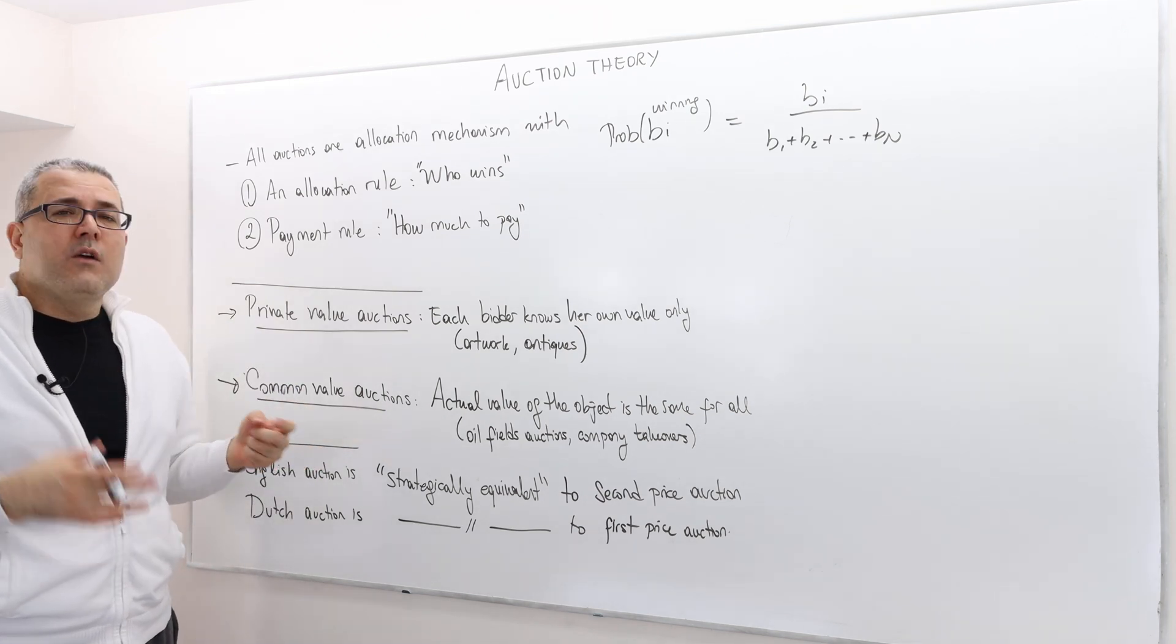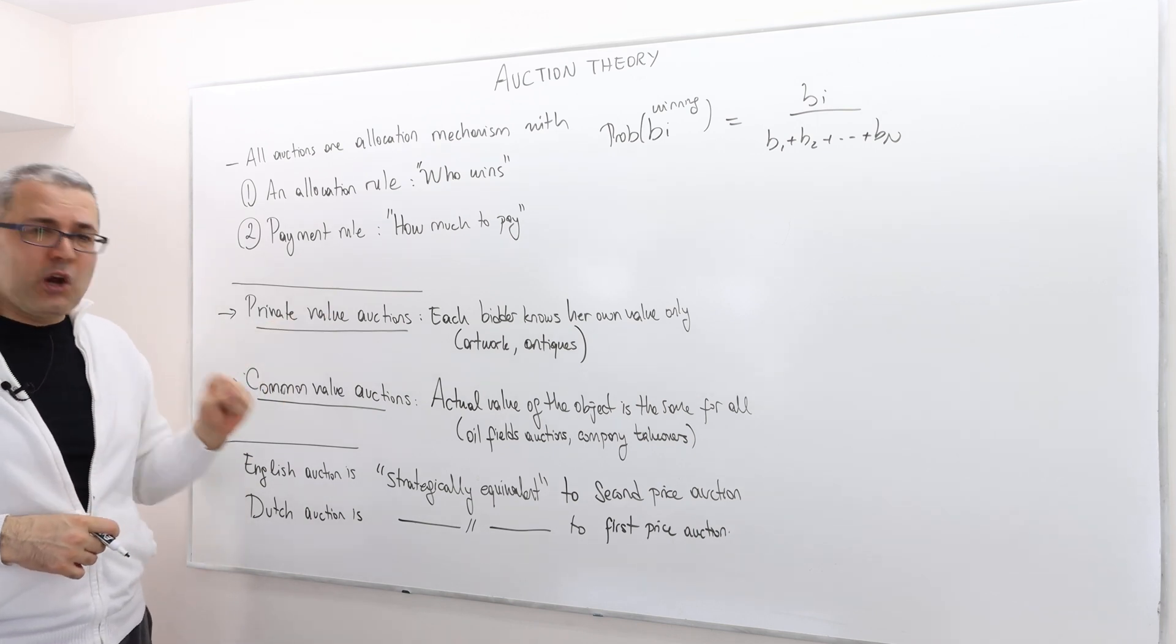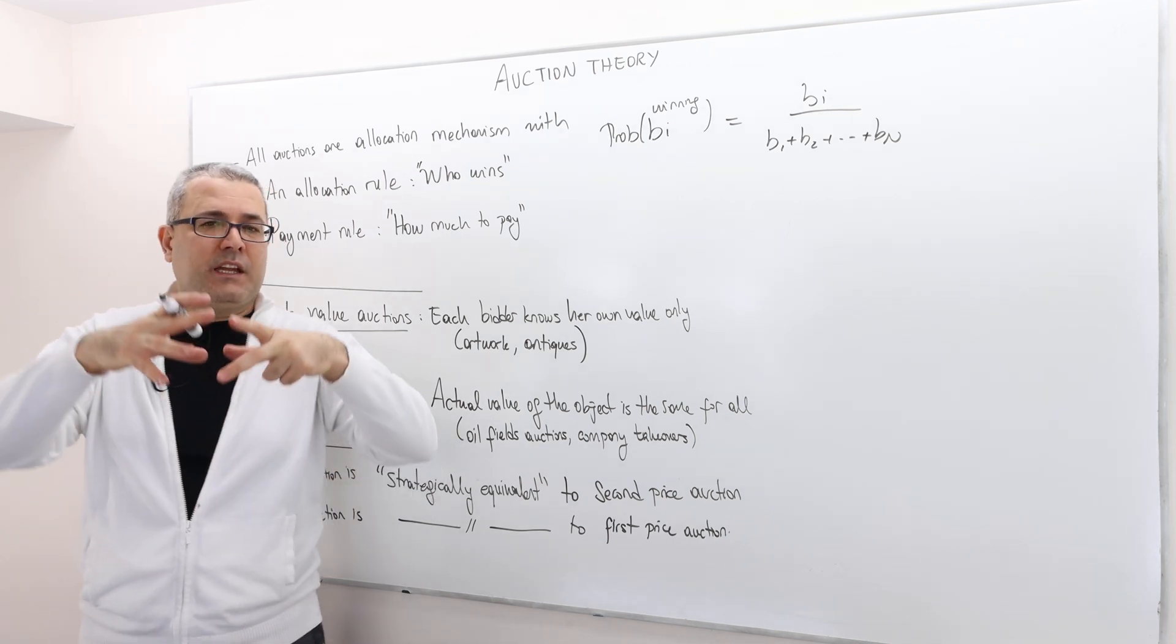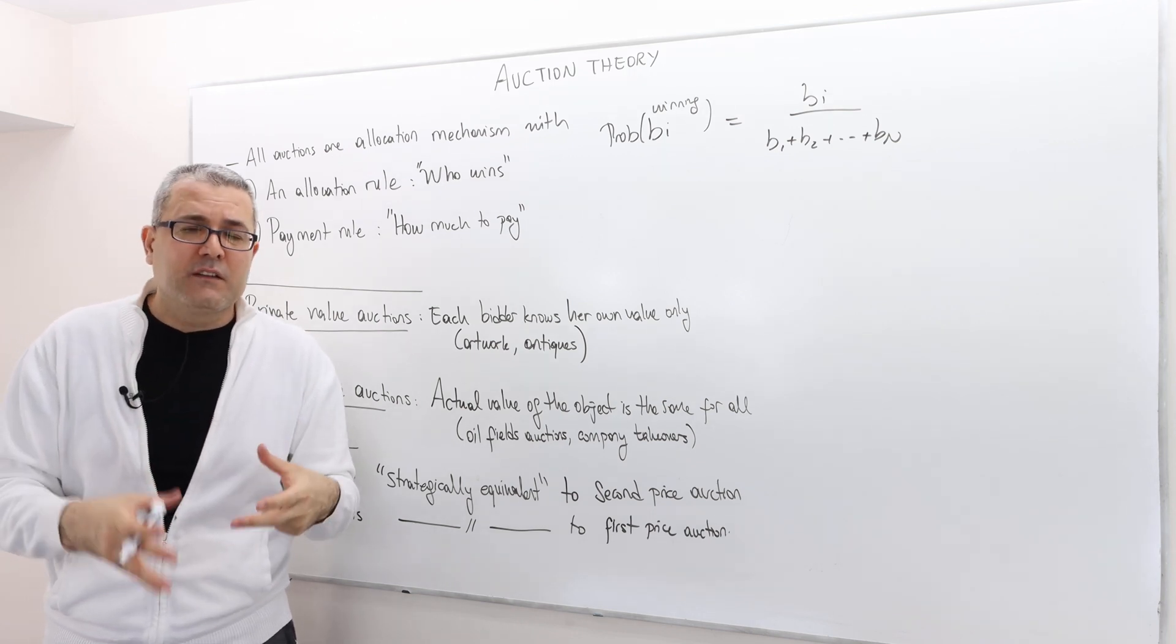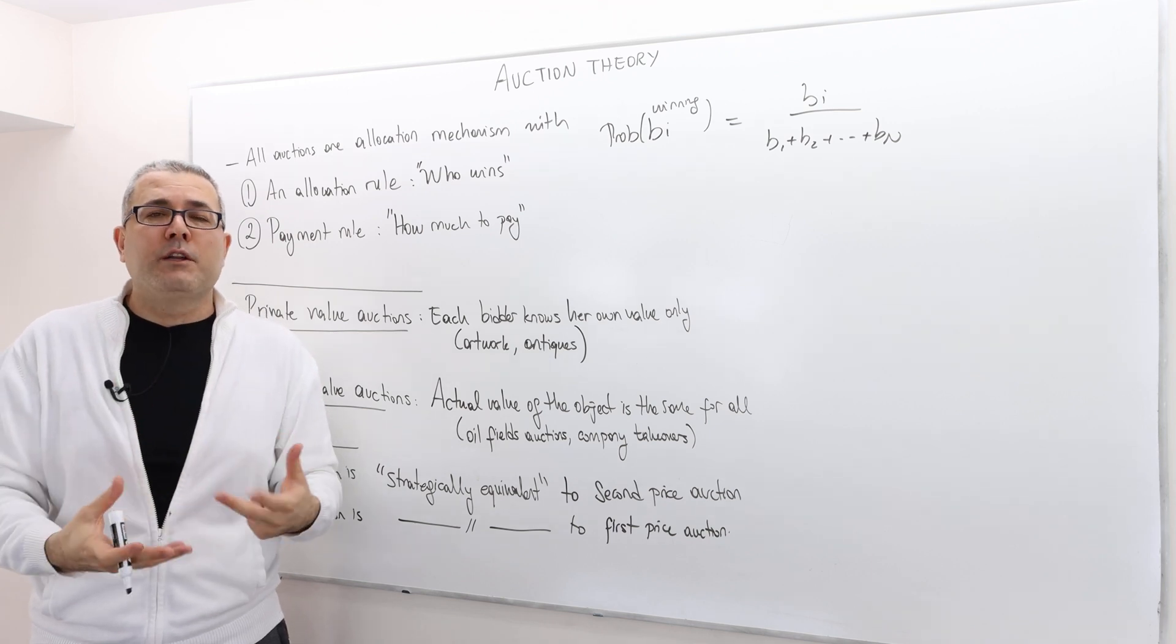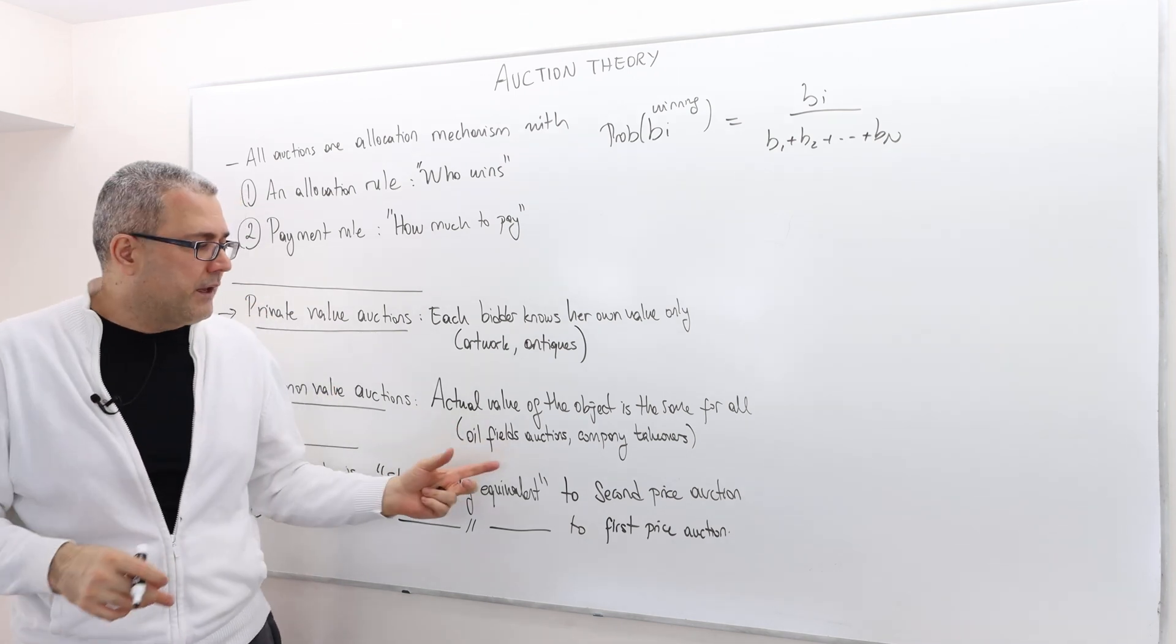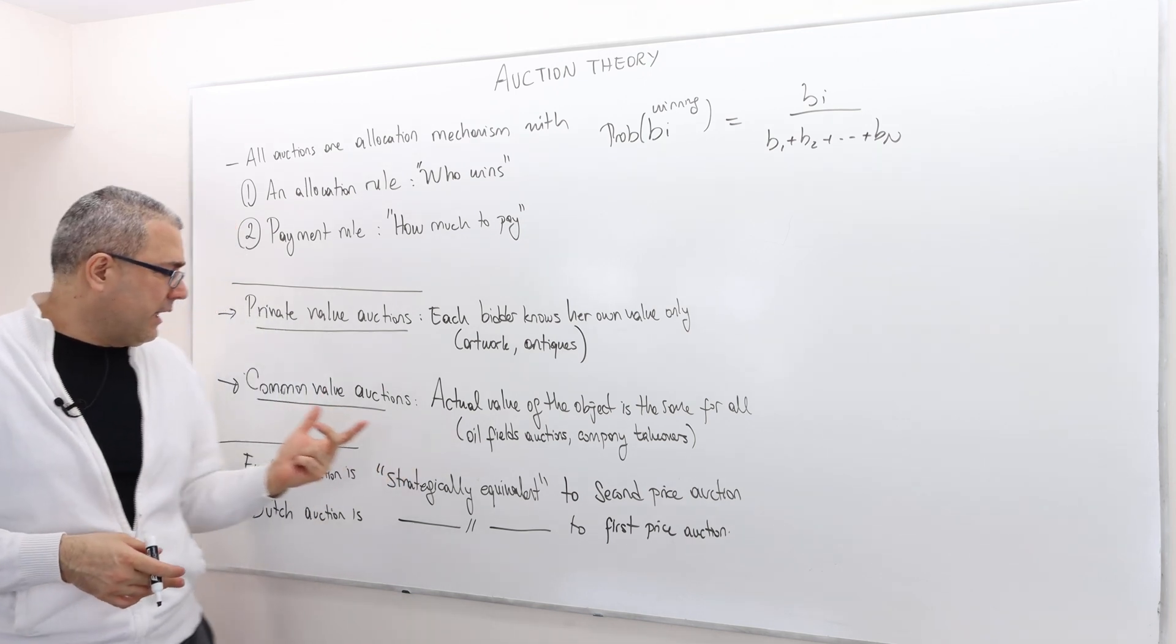The common value auction, well, these are usually the case where the value of the object is highly objective, not subjective, as in the private value auction. So in the common value auction, the actual real value of the object is the same for everybody. For example, oil fields auctions. So there is a region where the government is going to sell and the firms who are interested in extracting oil from this field are interested in participating to this auction. Therefore, the value of this land, this territory, depends on how much oil that they can extract. So the technology is the same for almost everybody. The labor cost, everything is almost the same. So therefore, the valuation should be the same, roughly speaking. Company takeovers, for example. Again, the worth of the company is the same for everybody. And so, therefore, again, these are common value auctions.